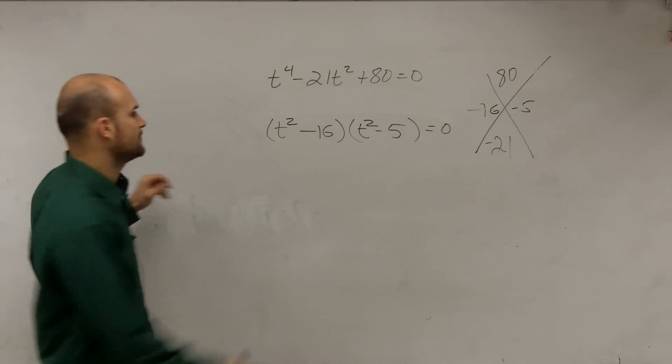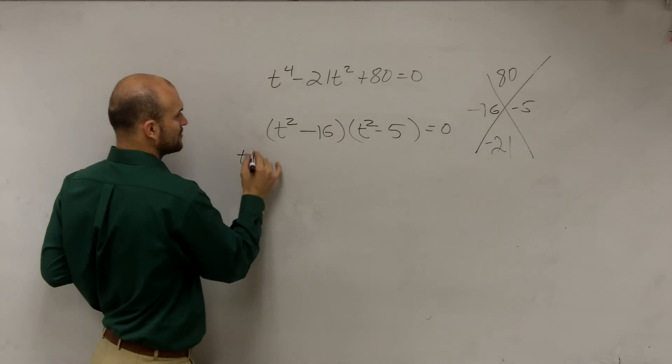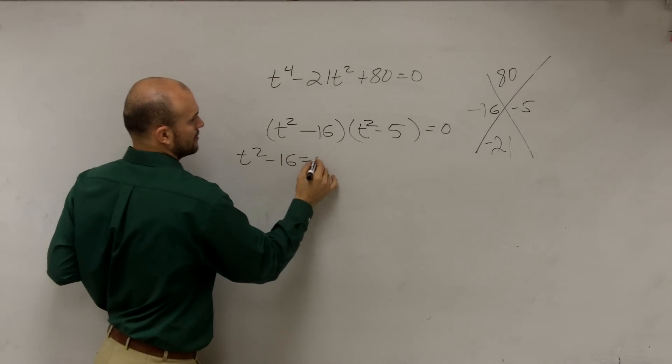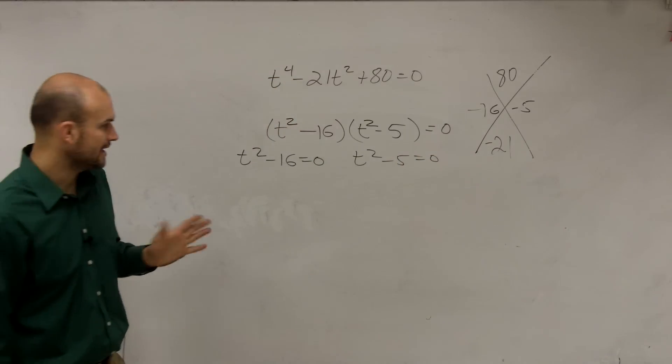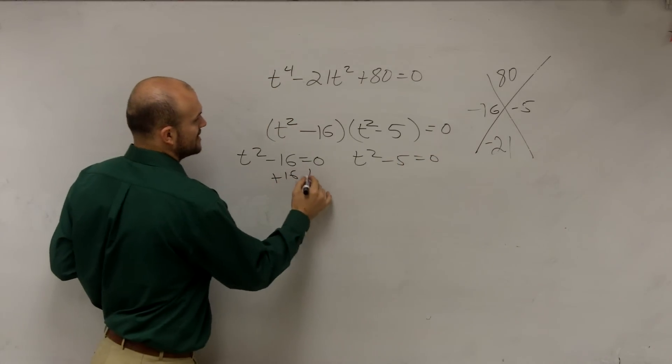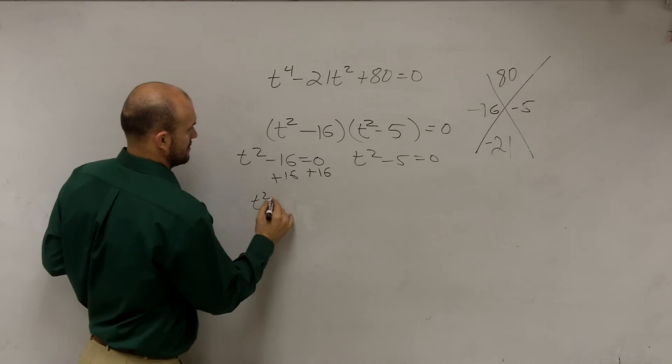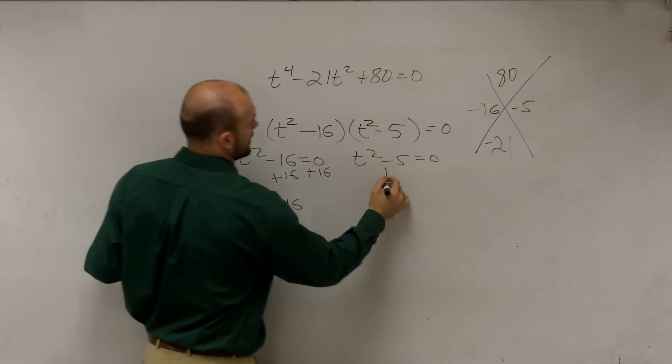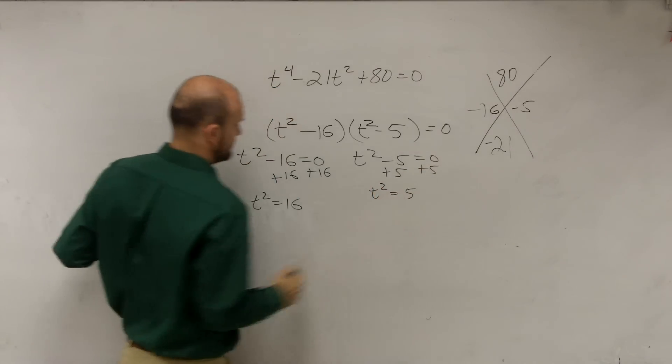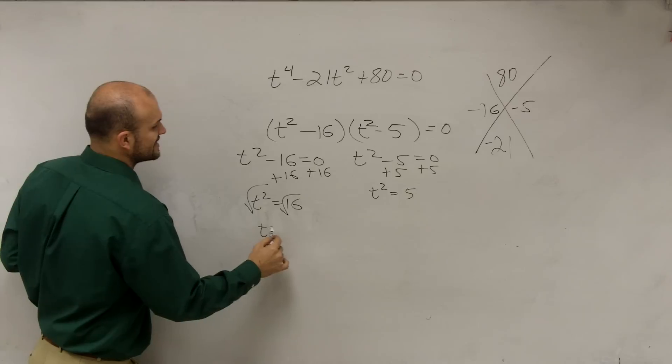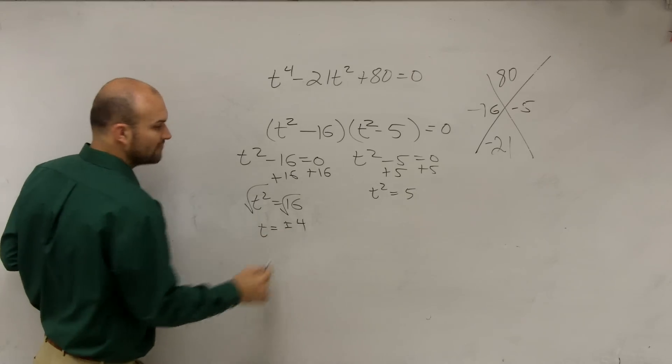Now we solve. So now we apply the zero product property. Okay. Add 16 to the other side. Add 5. Then we apply the square root. And you can say t equals plus or minus 4.